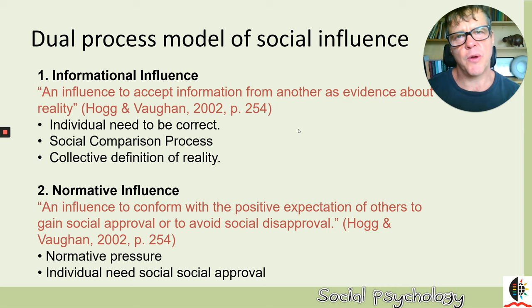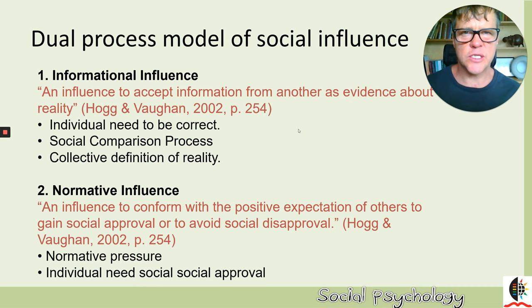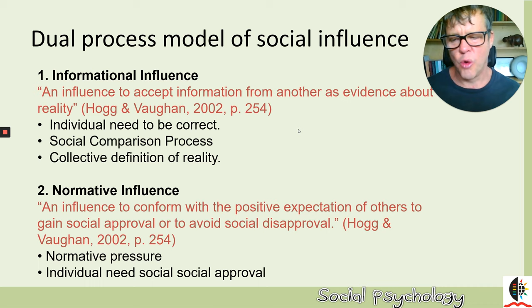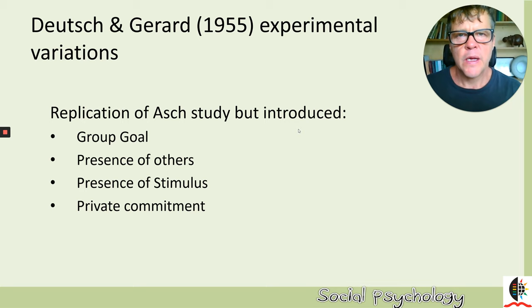The second influence Asch spoke about was normative influence — the pressure that others can place on you to conform. No one wants to stick out as a sore thumb holding views different from everyone else. There's a risk of rejection from the group and social disapproval. Solomon Asch called this normative pressure: the individual's need to seek social approval by conforming to what the group does.